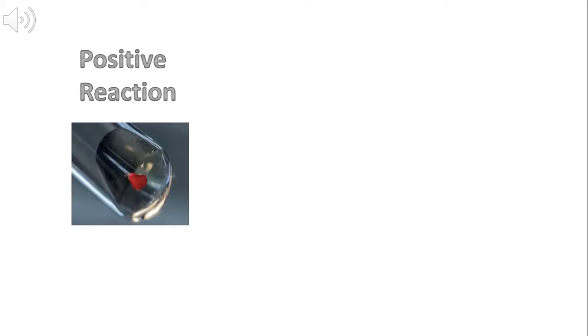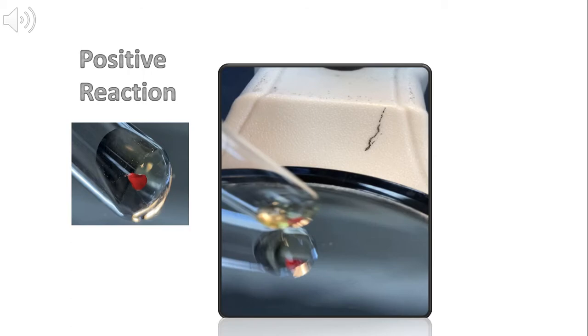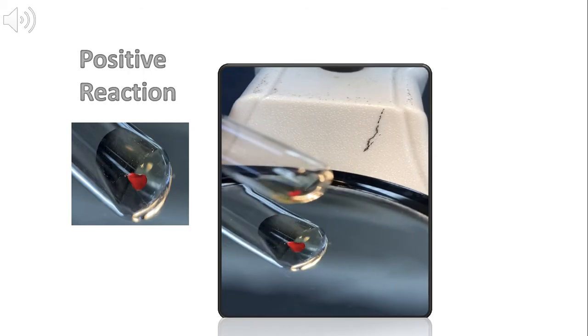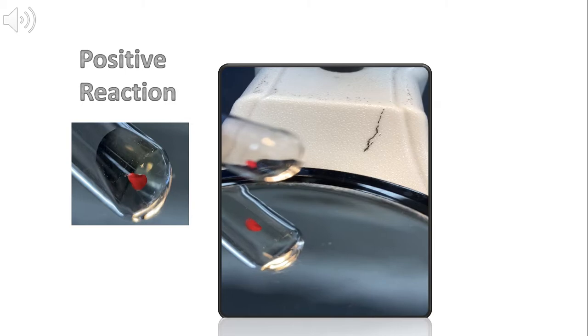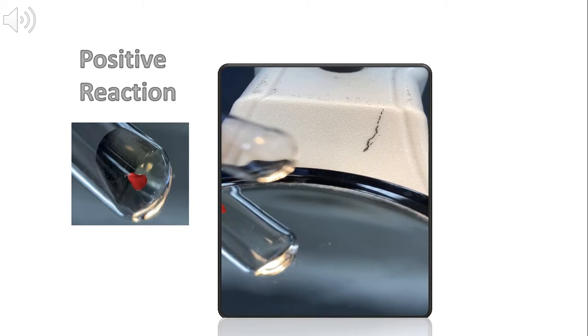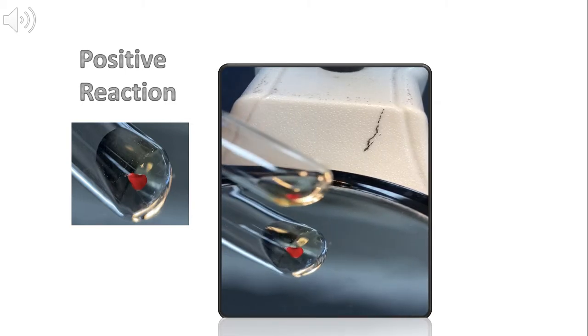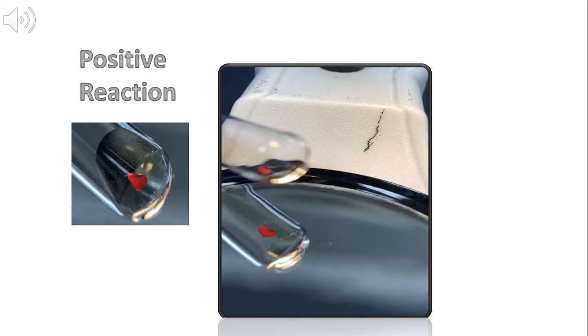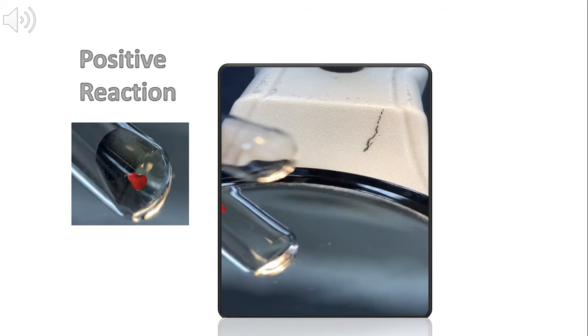To begin our discussion, let's start with a positive reaction. The video in this slide represents a reaction that is considered 4 plus in strength on a scale of 1 to 4. A 4 plus pattern is one in which one solid agglutinin appears behind a clear background.